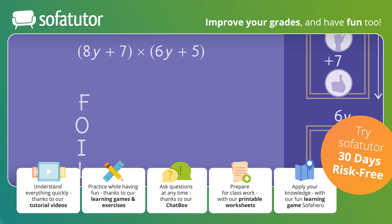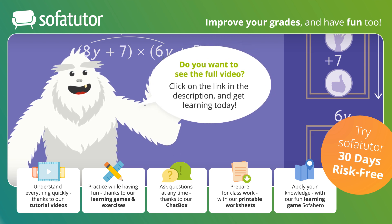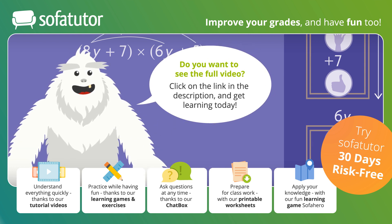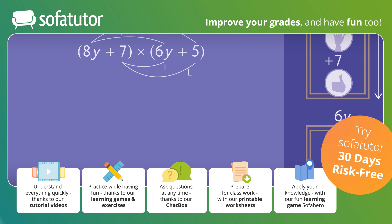To FOIL, multiply the first two terms of each binomial. Next, multiply the outer terms of each binomial. Then multiply the inner terms. And last, multiply the last terms. It kind of looks like a claw! Let's try it out using the measurements of the mirror.